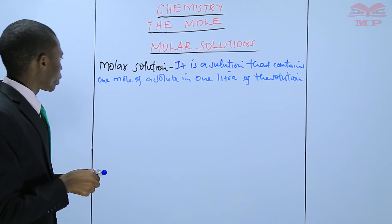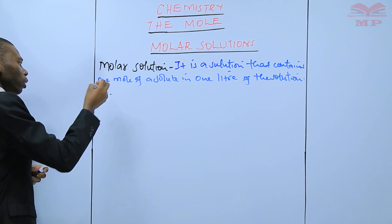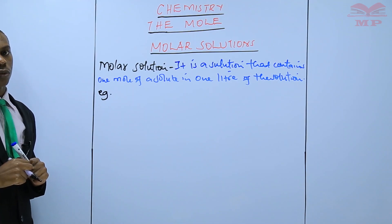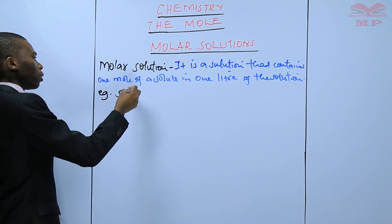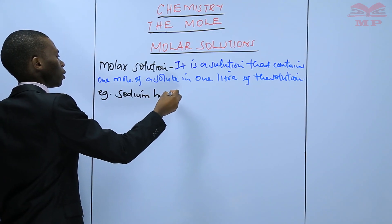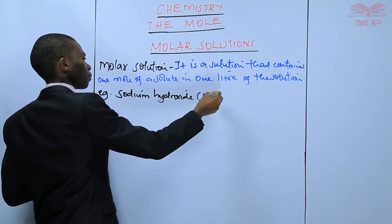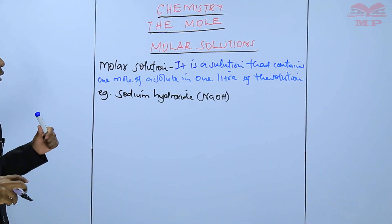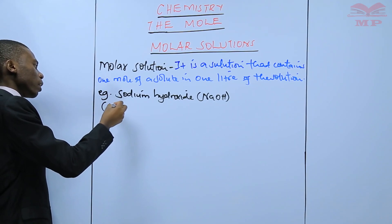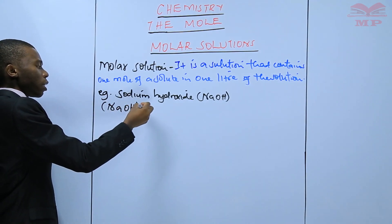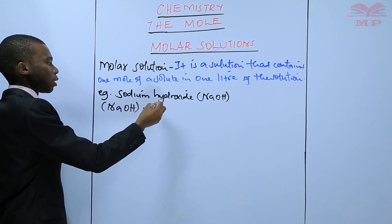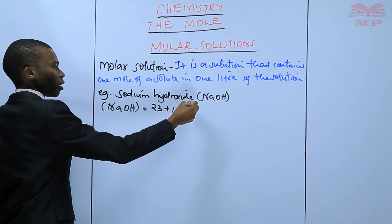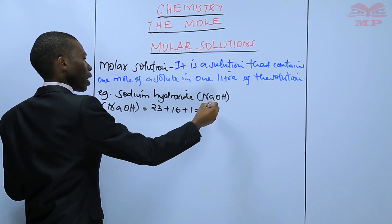Let me give you some examples. If you talk about one mole of a solute, let's take an example of sodium hydroxide. One mole of sodium hydroxide — start with the RFM. The RFM of sodium hydroxide: sodium is 23, oxygen is 16, hydrogen is 1. Therefore the RFM is 40.